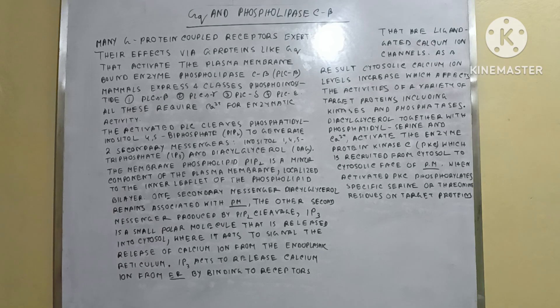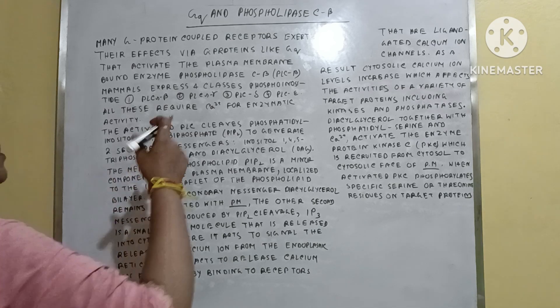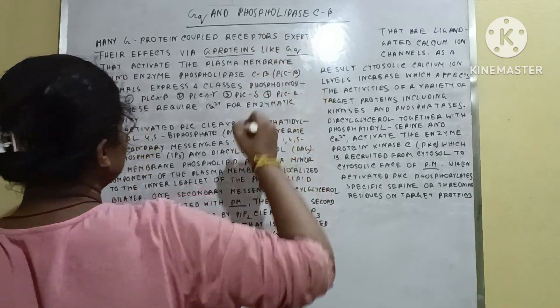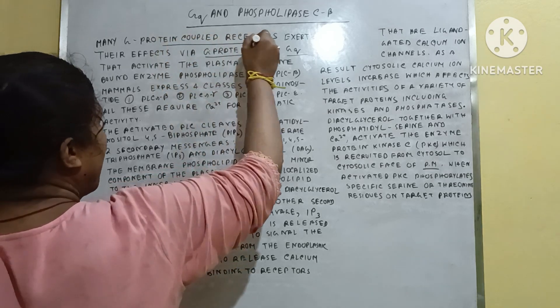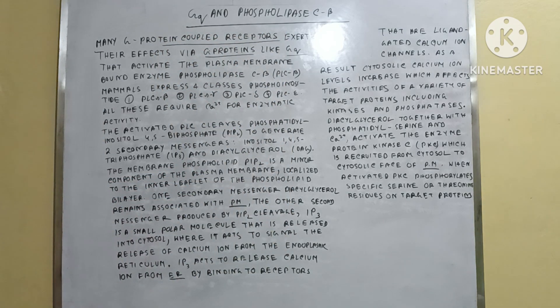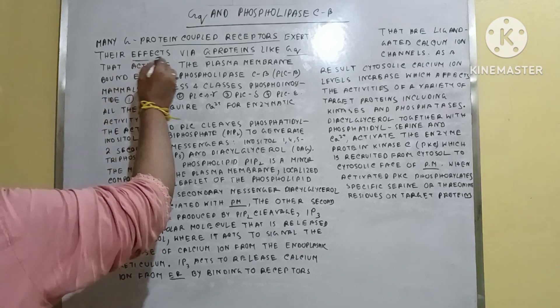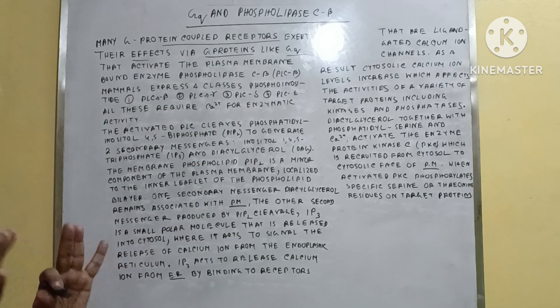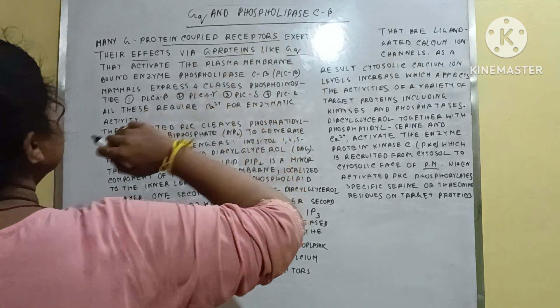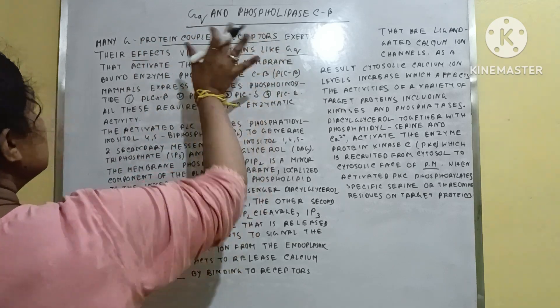The topic is G protein GQ and Phospholipase C beta. Many G protein-coupled receptors exert their effects via G proteins, like GQ for example. G protein-coupled receptors (GPCR) exert their effects via G protein. Without G proteins, GPCR cannot be activated. So GQ is one of the important G proteins.